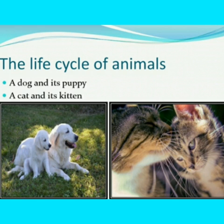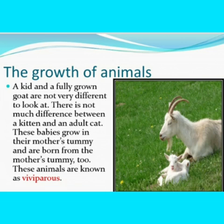In the same way, a kid and a fully grown goat are not very different to look at. There is not much difference between a kitten and an adult cat. These babies grow in their mother's tummy and are born from the mother's tummy too. These animals are known as viviparous.